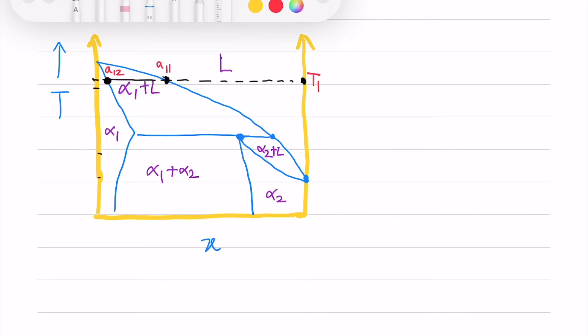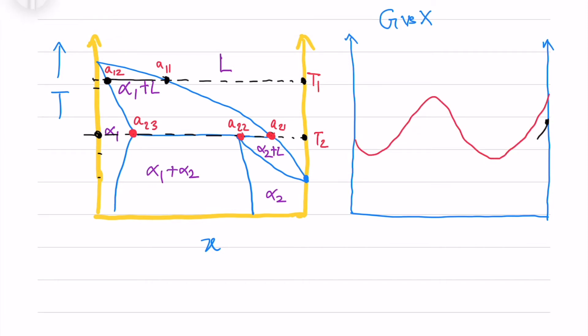Now the other G-X curve is at temperature T2, where I see the peritectic transformation. Here we see alpha 1, alpha 2, and liquid all at equilibrium. This is how I draw the alpha curve and liquid curve, and I take a common tangent for three dips.